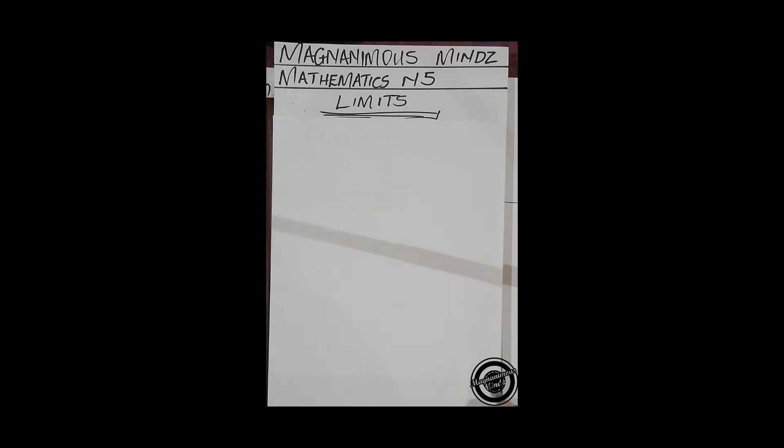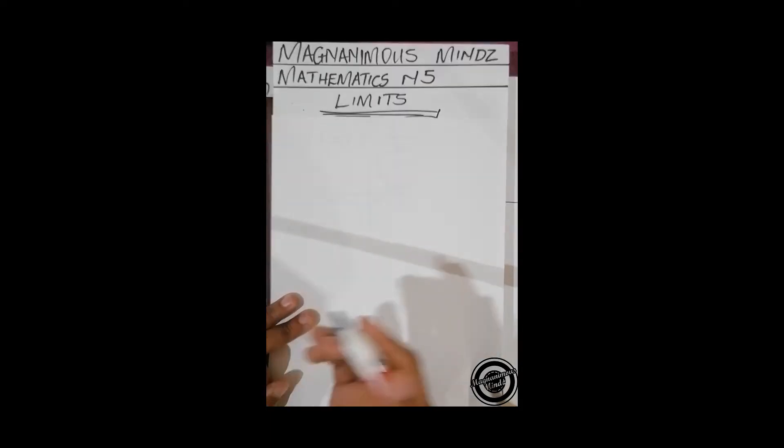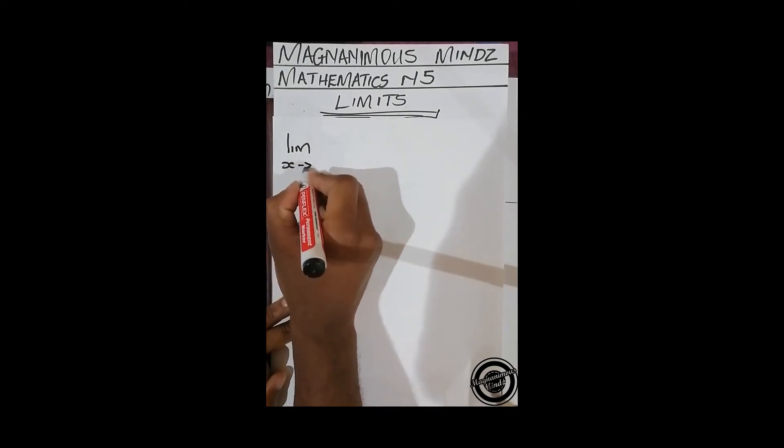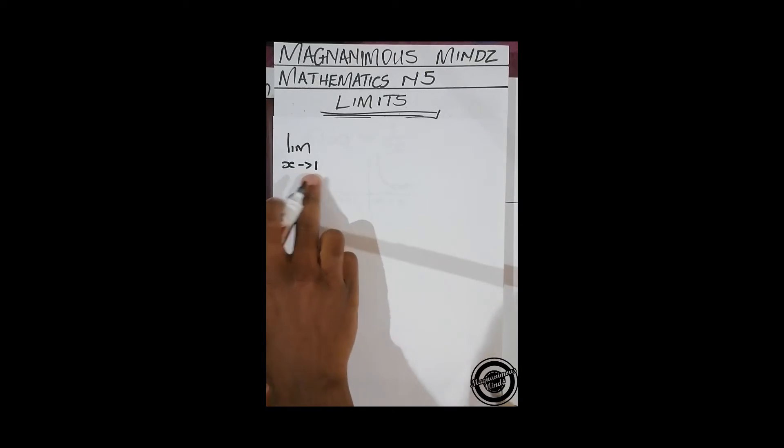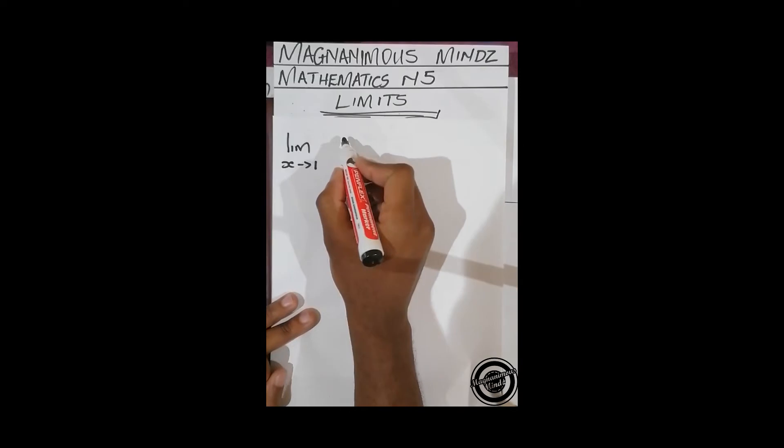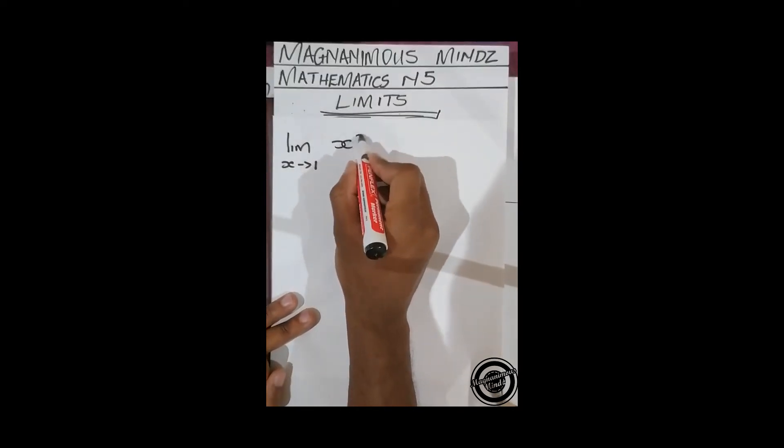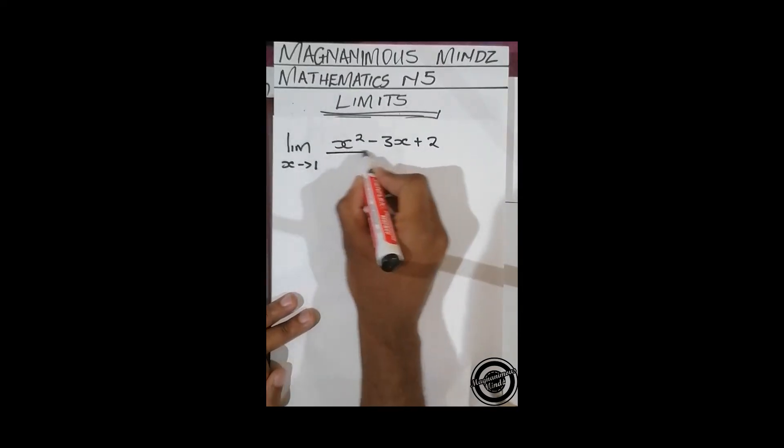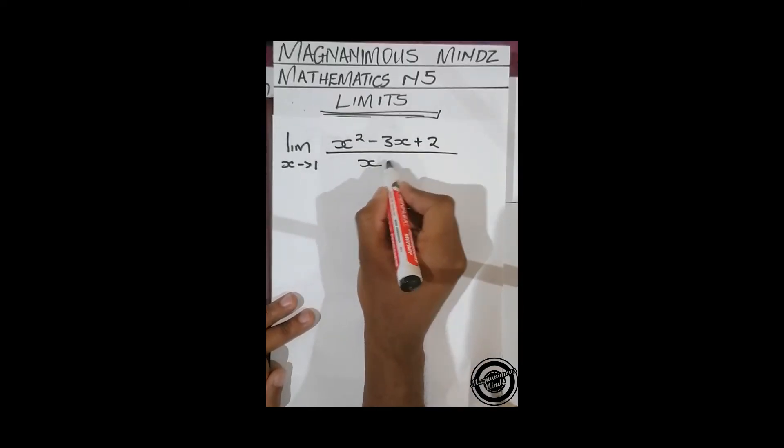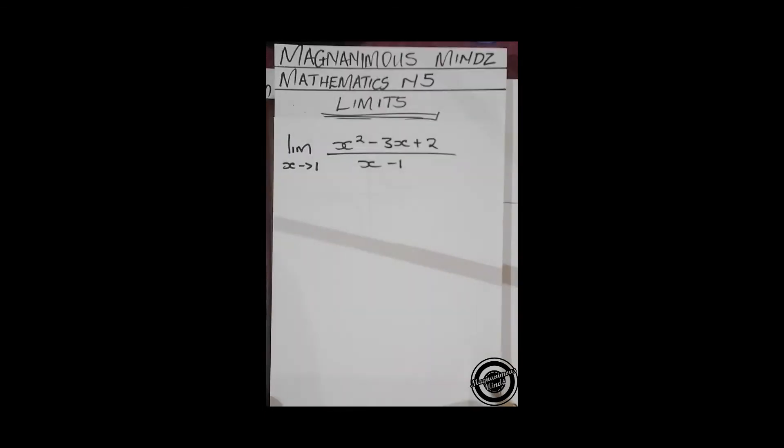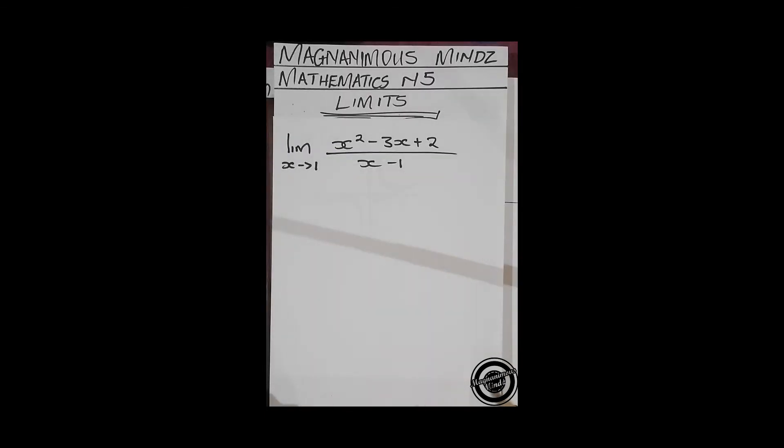So for you to find out what happens at that point, you've got to use limits. They are written as, I will use an example which is: lim x approaching 1, this x arrow 1 which means x approaching 1, and then our function is (x² - 3x + 2) all over (x - 1).